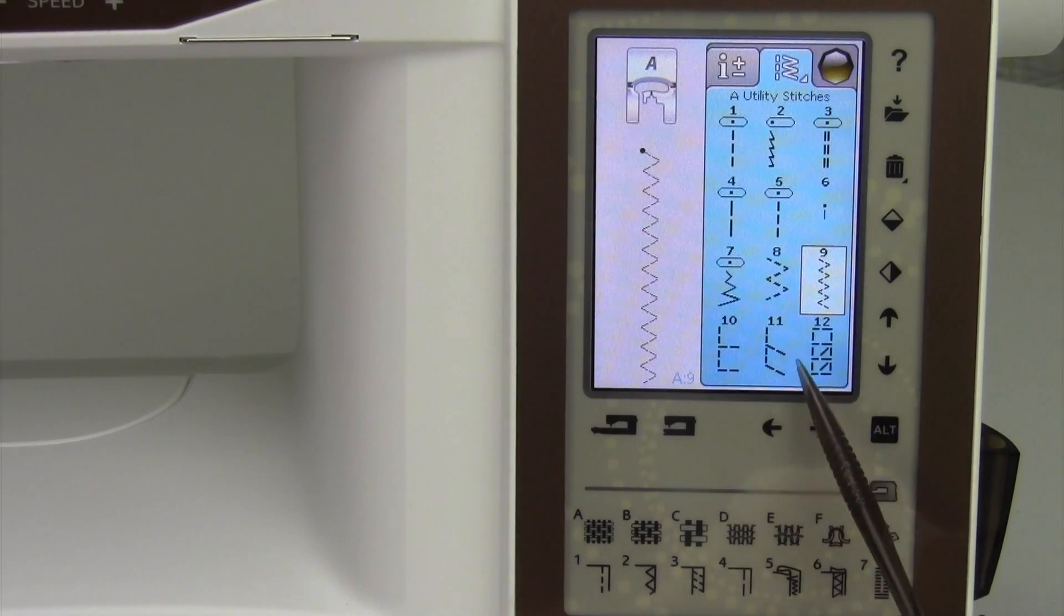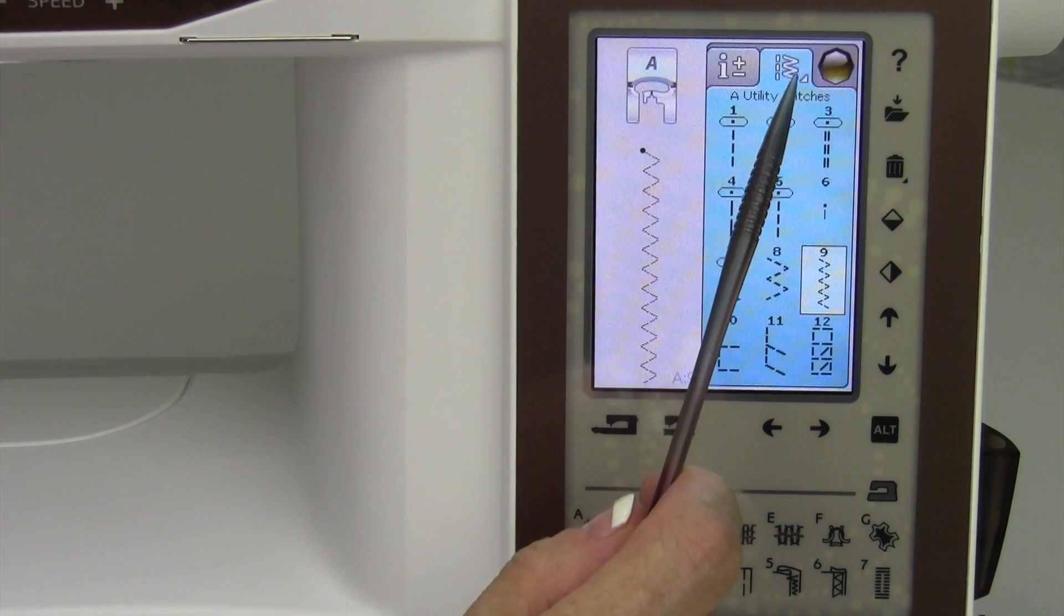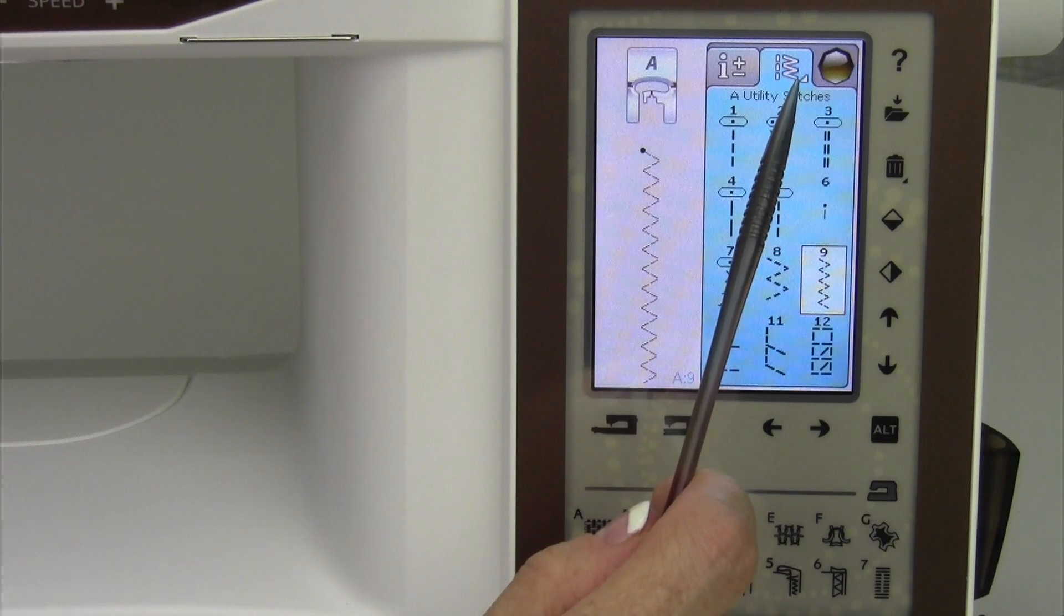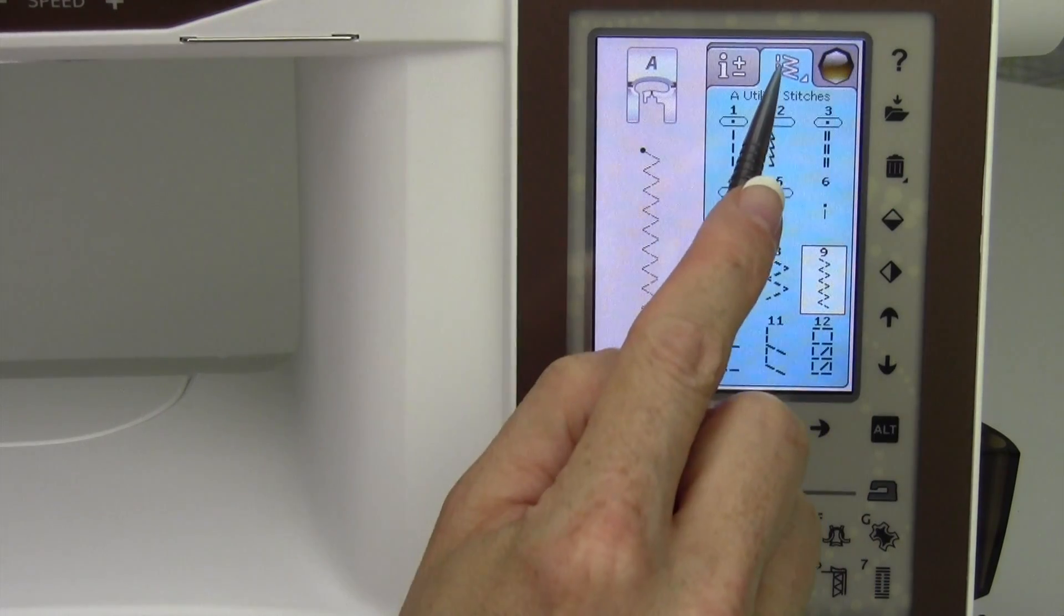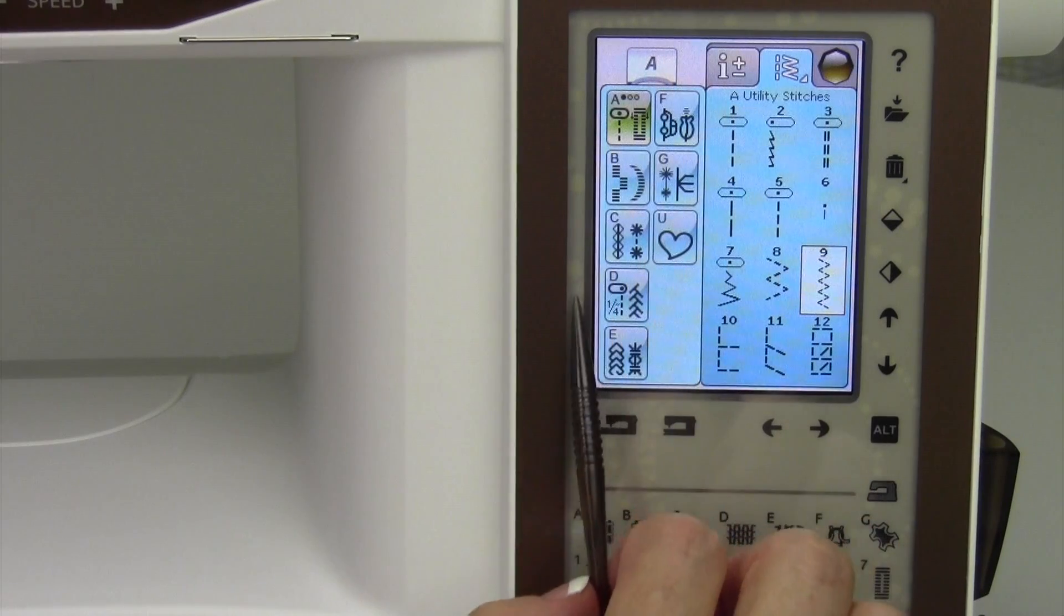On the utility stitches, there is more than one screen of utility stitches. I'm going to show you something that we'll talk about throughout all of our videos. If there is a function with a little lower arrow in the bottom right corner, that means you can touch and hold it for like two seconds.